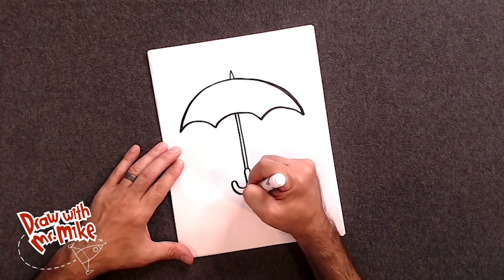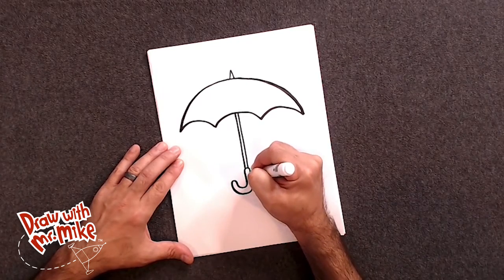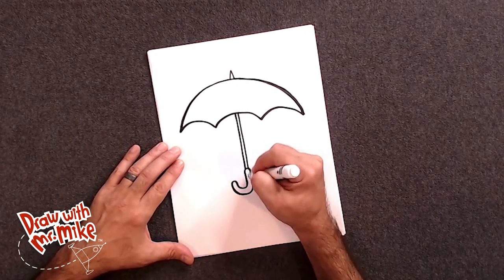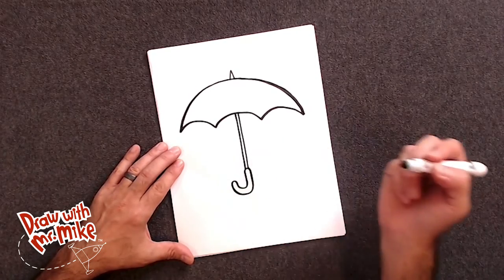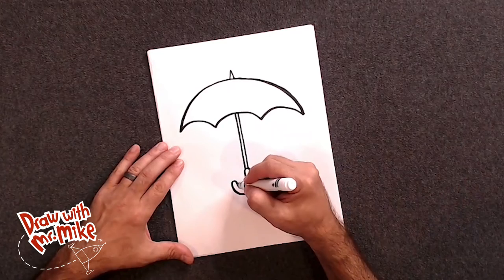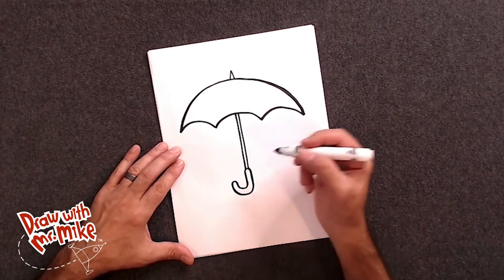Okay. And then you can just trace the whole outline again. Just make it a little thicker. Okay. This kind of... This looks like a J. Just like that. But we used arcs and lines to create this.